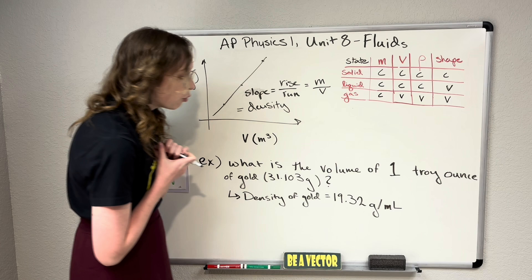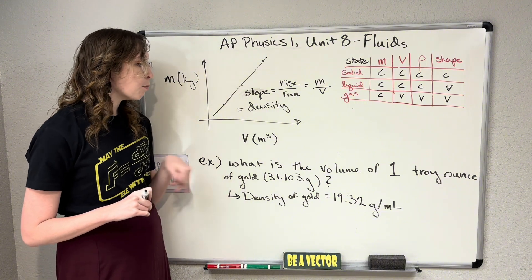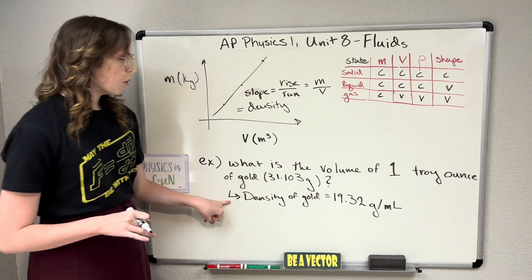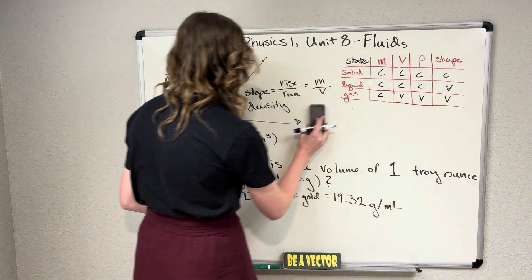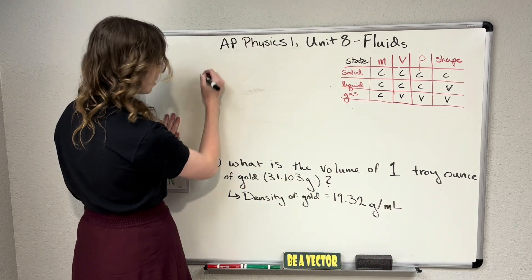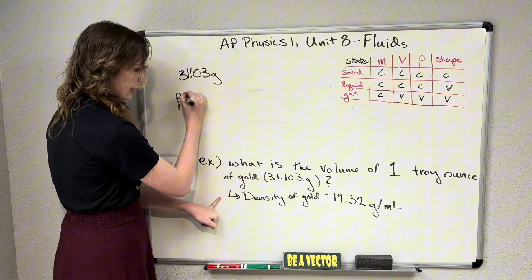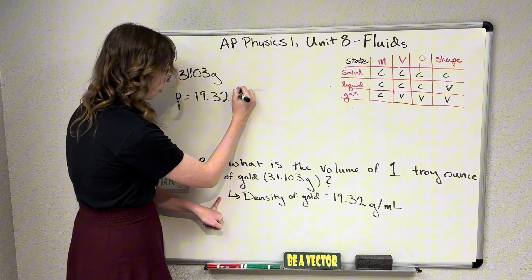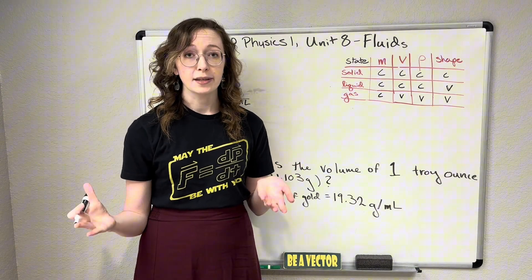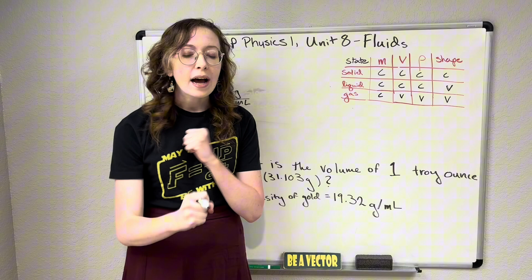So let's do a quick little bit of application here and run through this practice problem. So let's say we have one troy ounce of gold, or 31.103 grams of gold, and we're asked to find the volume of that. Well, we're given the density of gold. It's 19.32 grams per milliliter. And we know that, so we have 31.03 grams, and we also know that our density is equal to 19.32 grams per milliliter.